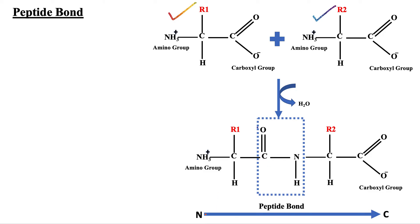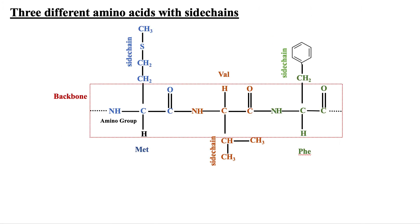The chain elongates from N to C terminus. We call it N terminus or amino terminus because it has a free amino group, while the C terminus has a free carboxylic group.